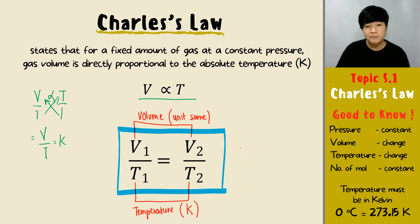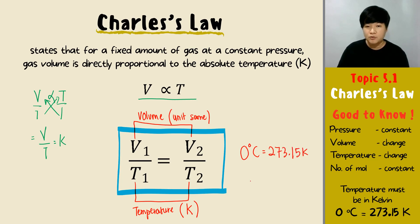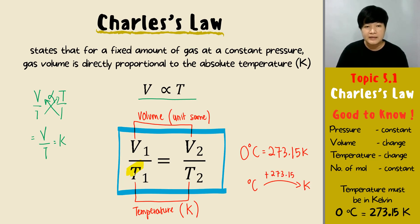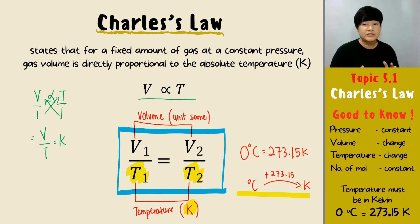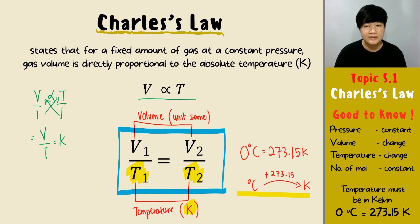Just a kind reminder talking about Kelvin: 0 degrees Celsius equals 273.15 Kelvin. In other words, to change from degrees Celsius to Kelvin, we add 273.15. Please remember that the temperature in Charles' Law must be in Kelvin, and this is the conversion from degrees Celsius to Kelvin. There is no option for the unit — that is the formula of Charles' Law.